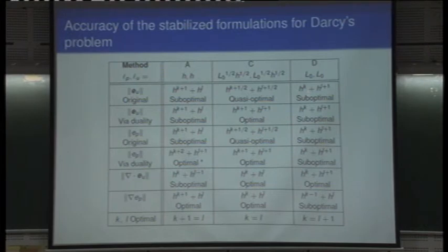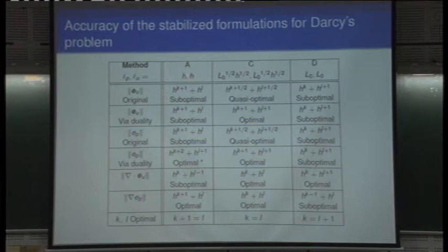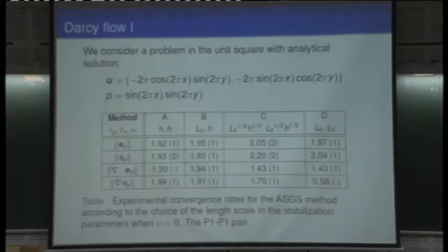The numerical tests show optimal convergence rates in the adequate norm. For a test with an analytical Darcy flow solution, the convergence rates obtained agree with those predicted by theory (shown in parentheses). Using equal P1-P1 interpolation, taking the length scale as the square root of the product of the global length scale times the element length scale gives the best results — exactly as theory predicts.